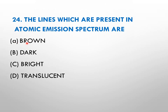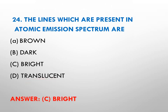Question number twenty-four: the lines which are present in atomic emission spectrum are — A brown, B dark, C bright lines, D translucent lines. In atomic emission spectrum we get bright lines, so C is the right answer.